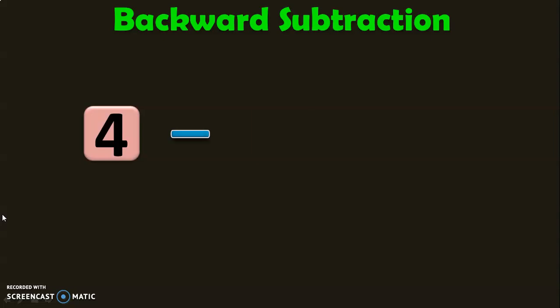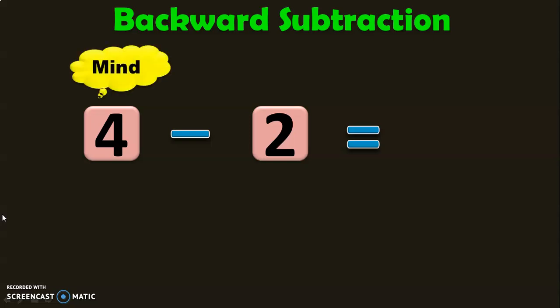How do you subtract 4 minus 2? In our usual method of subtraction or the backward subtraction, we keep 4 in the mind and 2 in the fingers. And subtraction means we will always deal with the before numbers. Before 4, 3, 2.